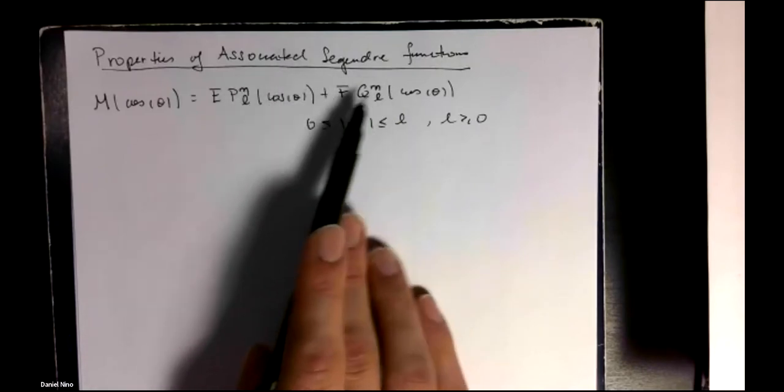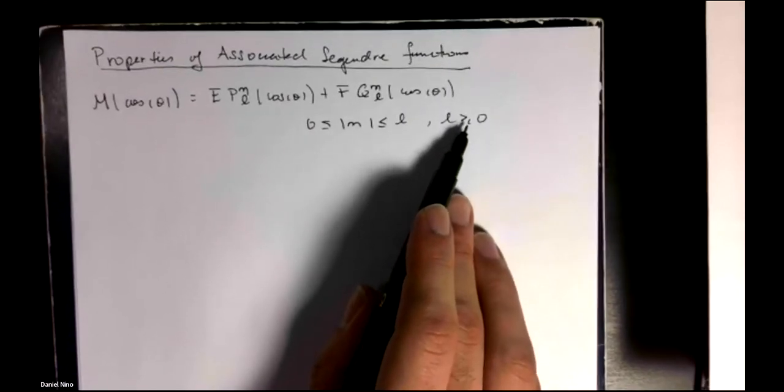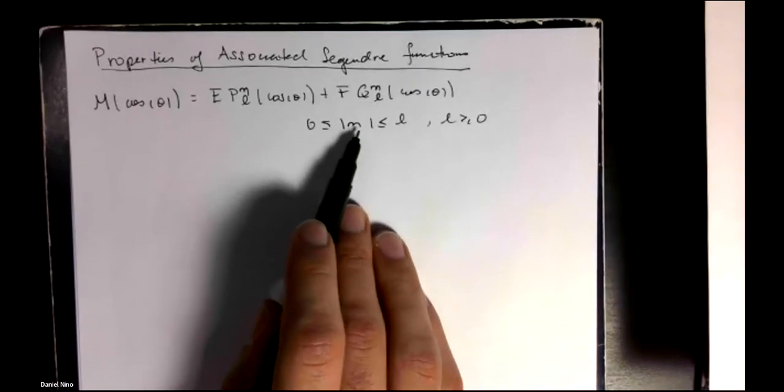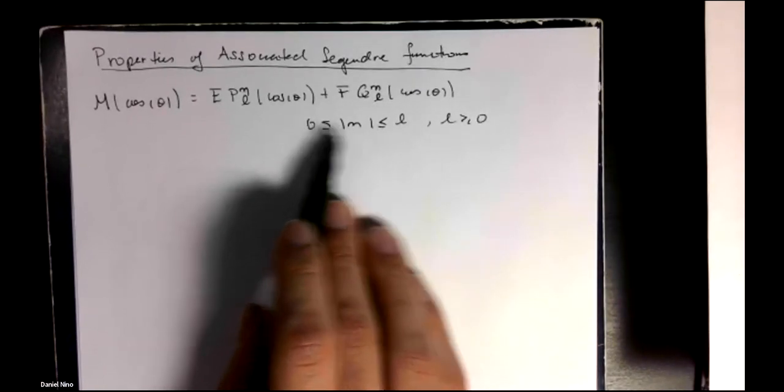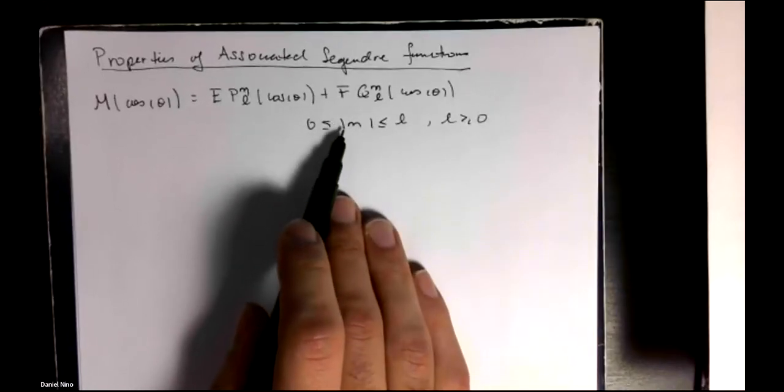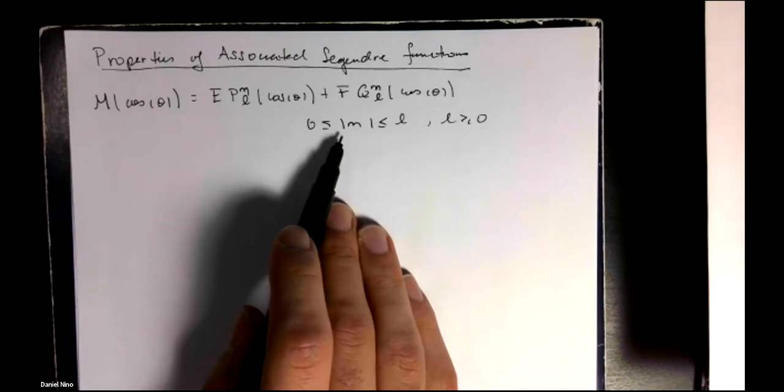These functions are only defined for l being greater than or equal to zero, and the absolute value of m being between zero and l inclusively. This means that m can technically speaking be negative, but we won't really consider that at the moment.